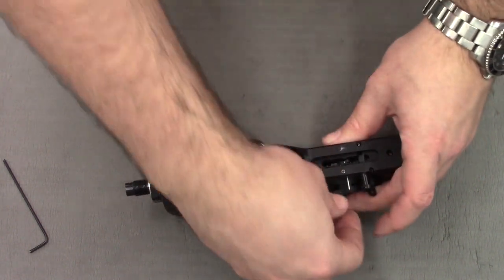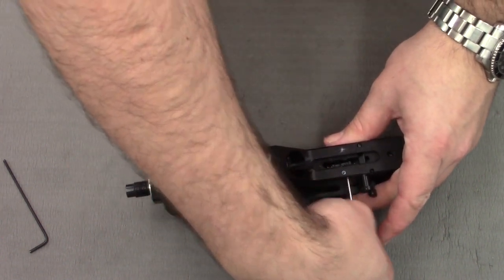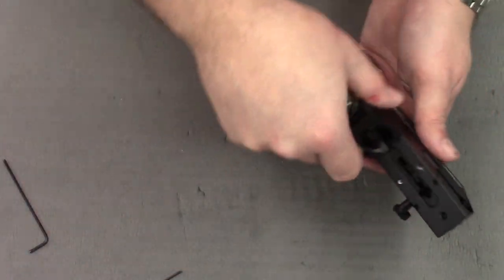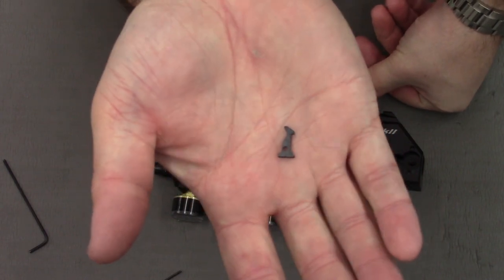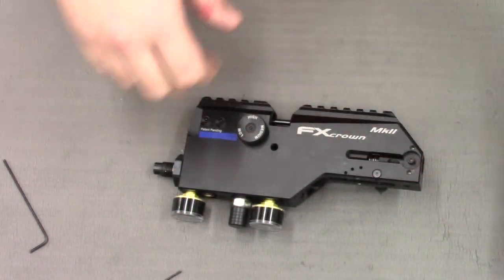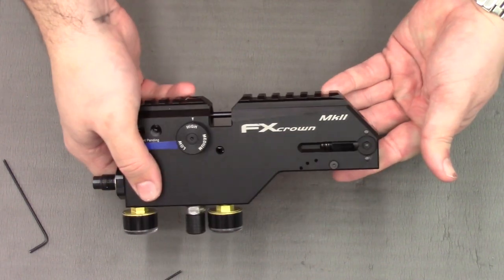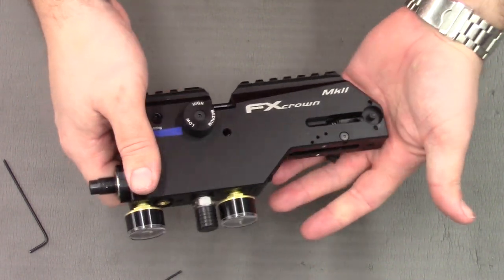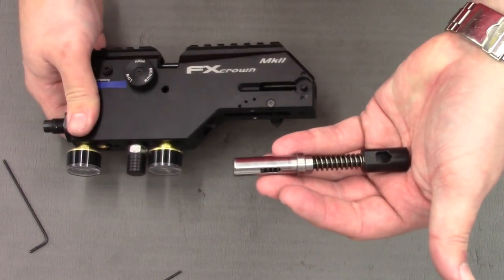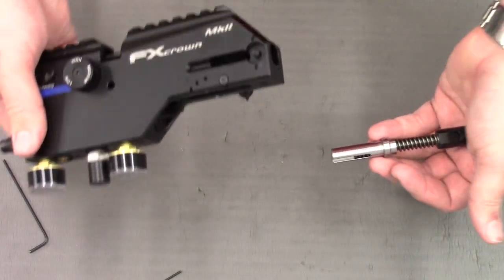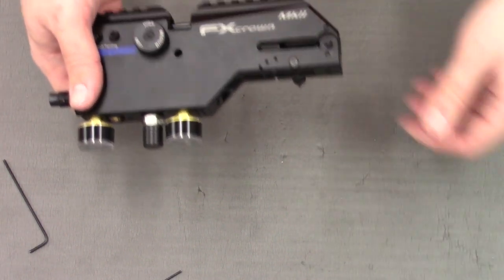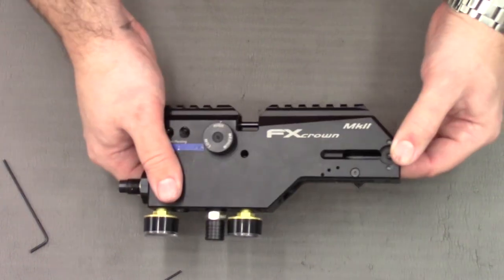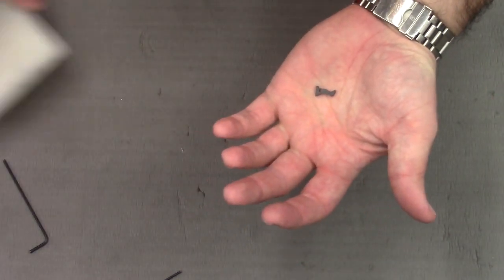And the final one is the trigger sear itself. While we're here we'll remove the hammer assembly just in case. You can just slide it out with the trigger sear not in the rifle. This is free to slide out. So we're done with the block for the moment. Put that to one side and bring back the trigger sear.